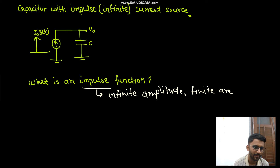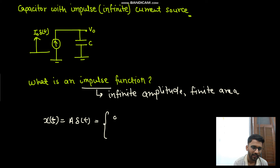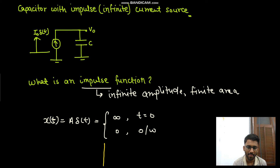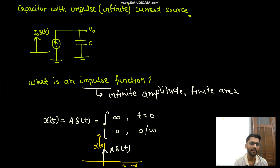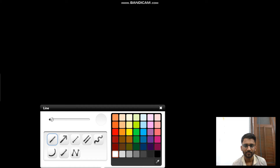Let us assume we have a function x(t) = a·δ(t). It would be infinite at t=0 but zero otherwise. You can draw it like this — x(t) has infinite magnitude at t=0 and is zero otherwise. This 'a' represents the area.